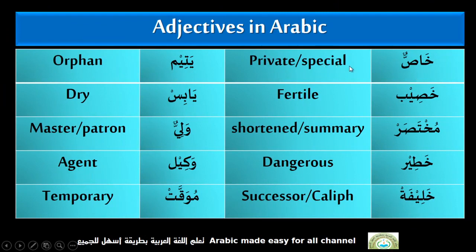Khashun — Private or Special. Khasibun — Fertile. Mukhtasar — Shortened, Summary. Khatirun — Dangerous. Khalifa — Successor or Caliph. Yateen — Orphan. Yabesun — Dry. Waliun — Master, Patron.